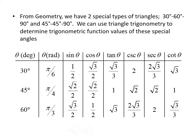We can use triangle trigonometry to determine trigonometric function values of these special angles. Looking at the table, we see three special angles: 30 degrees, 45 degrees, and 60 degrees, which also measure pi over 6 radians, pi over 4 radians, and pi over 3 radians, respectively. You can see the list of all of their trig function values. These are the values that would be present on the unit circle if you're using that to help you compute your trigonometric function values.